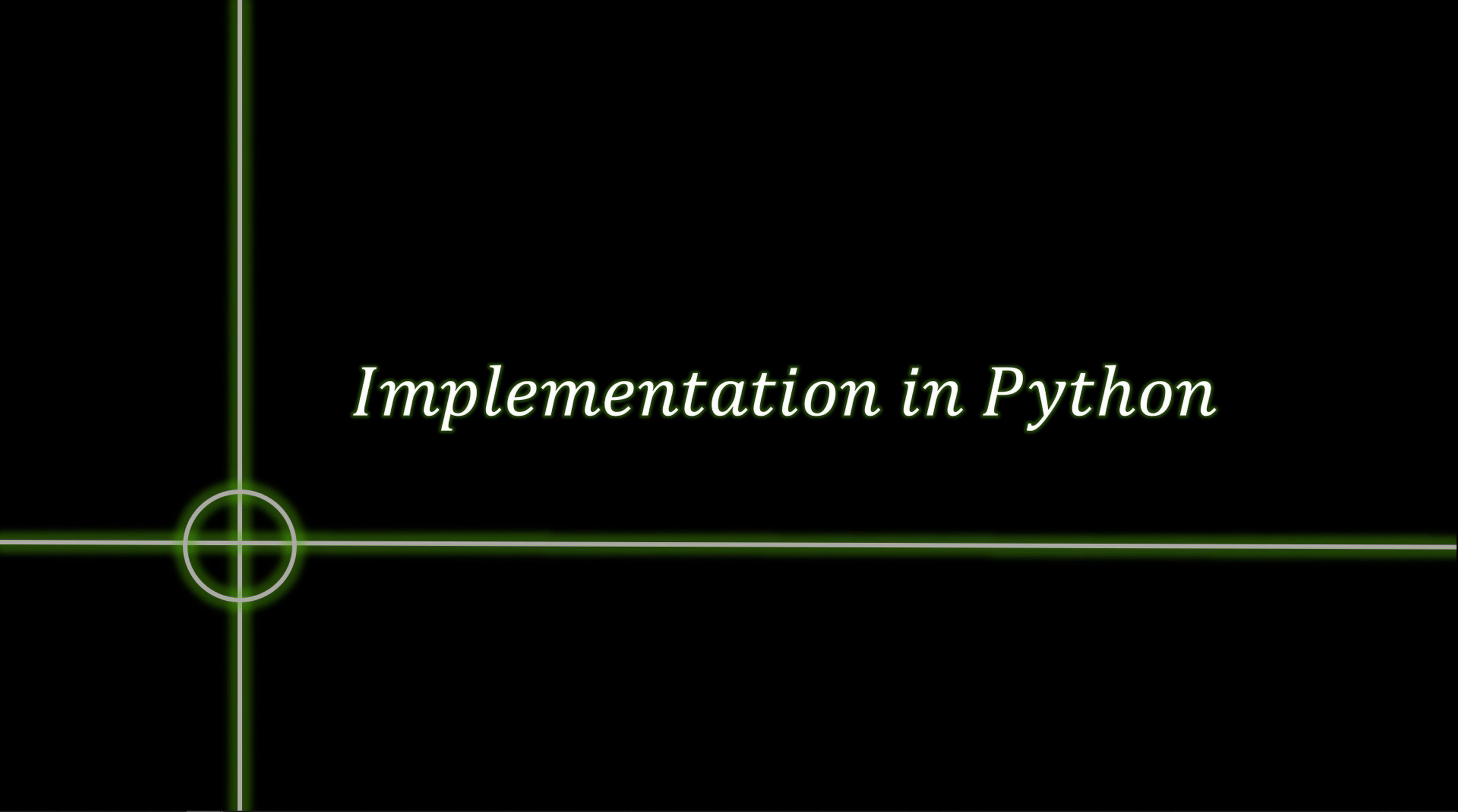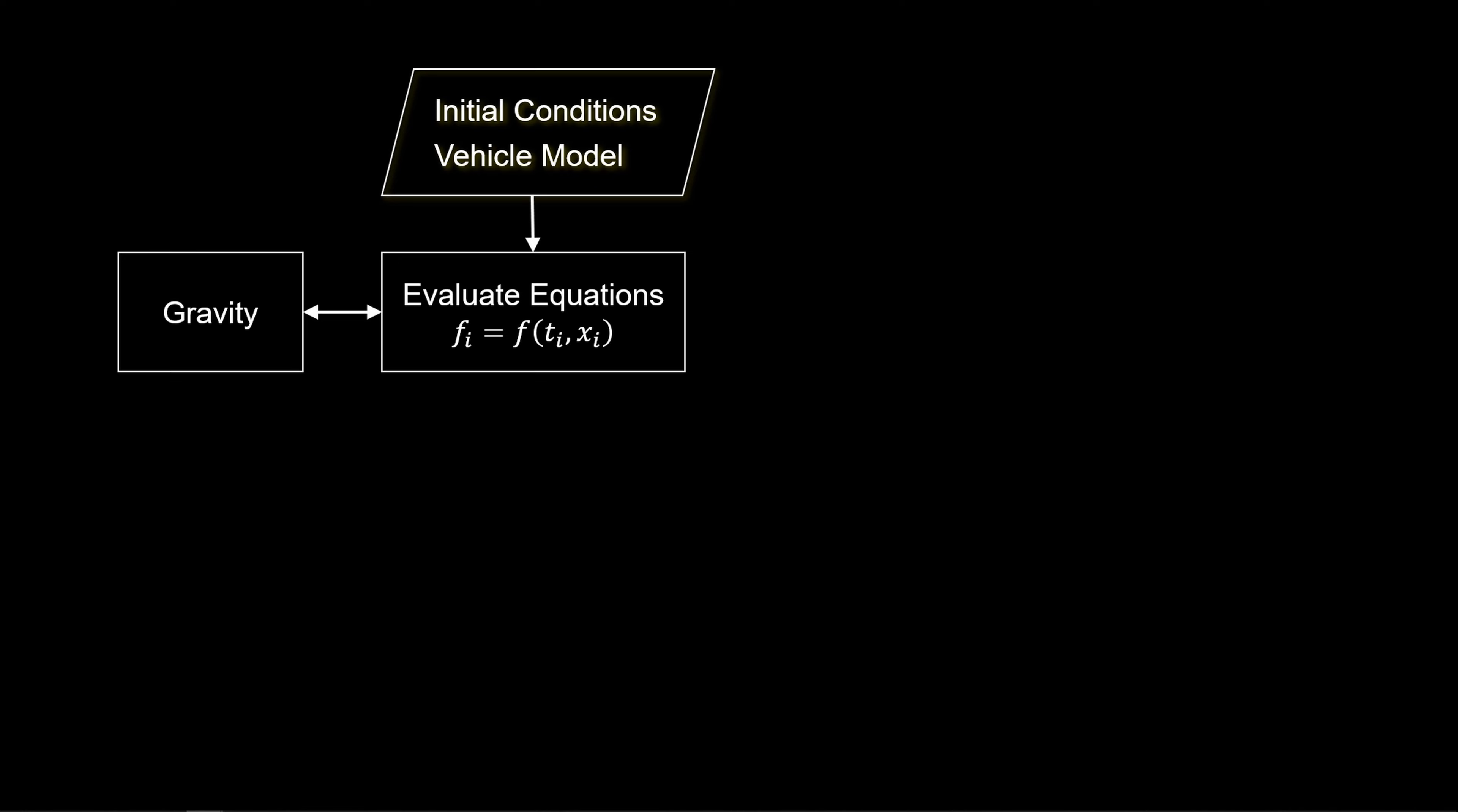All right, let's program the Euler kinematics and create our first working simulation. To orient ourselves, let's review the simulation process. The initialization of the simulation involves selection of a vehicle model and setting the initial conditions for the state equations. The initial time is set as the current time, ti, where i is an index that counts points in time from the initial to the final step.